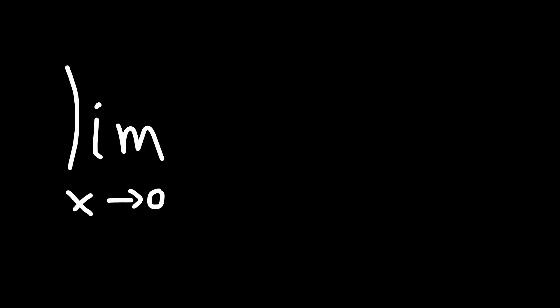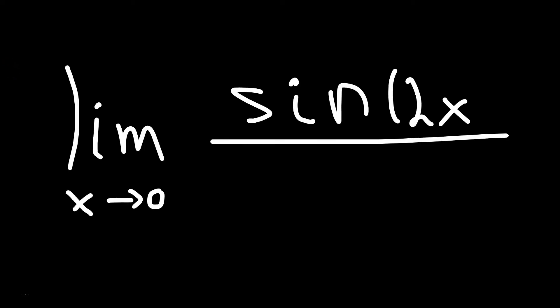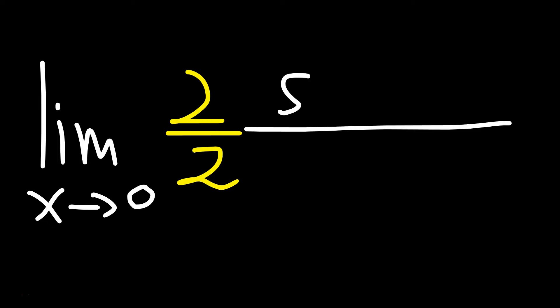Let's find the limit as x approaches 0 of sine of 2x divided by 5x. So first we're going to do the limit as x approaches 0, and then you're going to multiply by 2 over 2 because that's 1. And then you're going to copy the sine of 2x over the 5x for now.